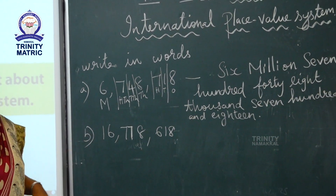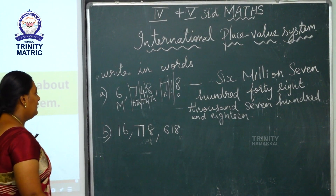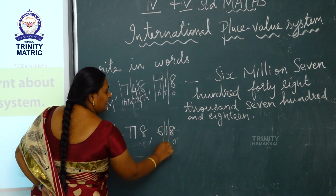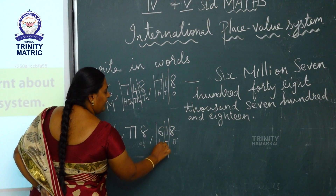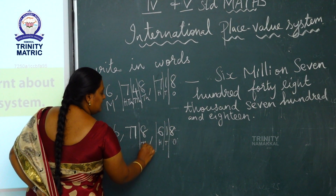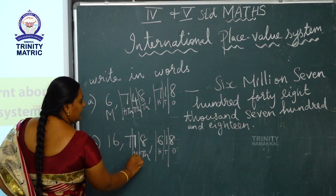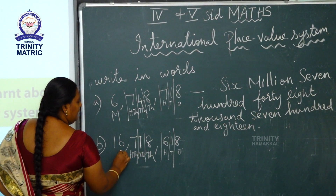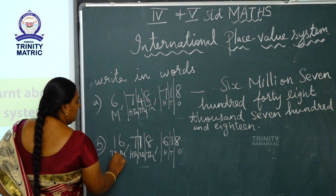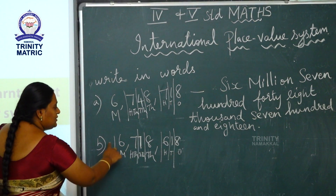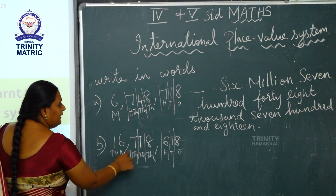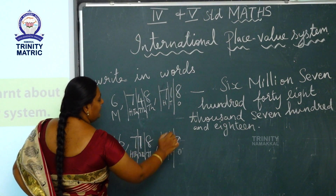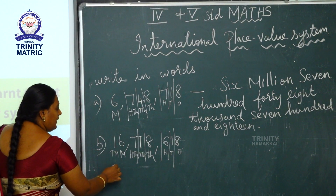Now write the number name for the next sum. Again you split: ones, tens, hundreds, thousands, ten thousands, then hundred thousands, then million, ten million. Write the number name for 16,778,618. This is the number name.